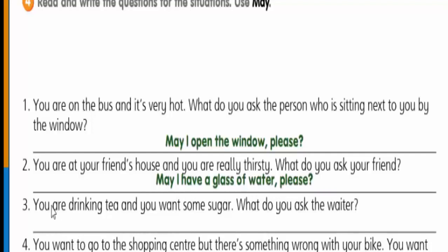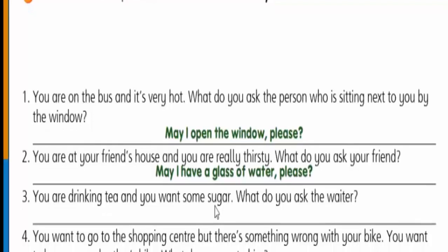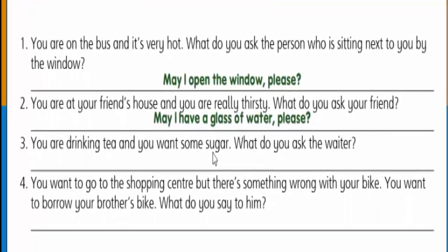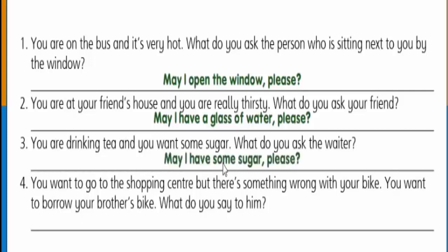Number three: you are drinking tea and you want some sugar — what do you ask the waiter? That's right — 'May I have some sugar please?'